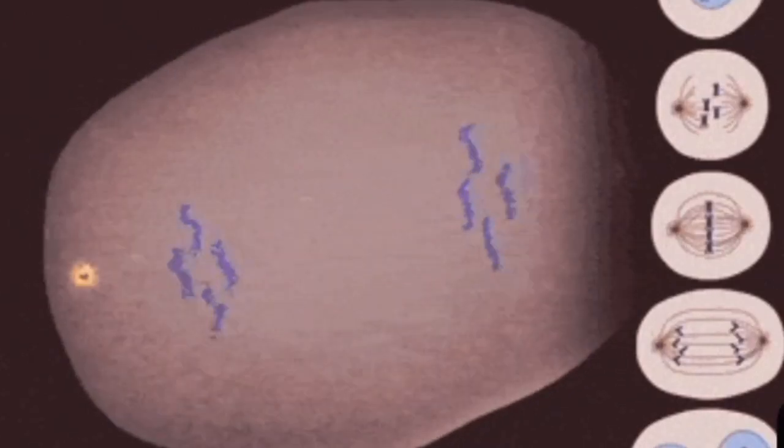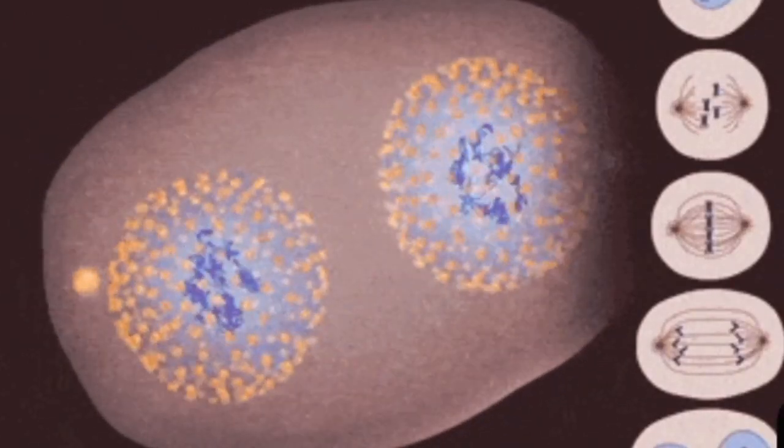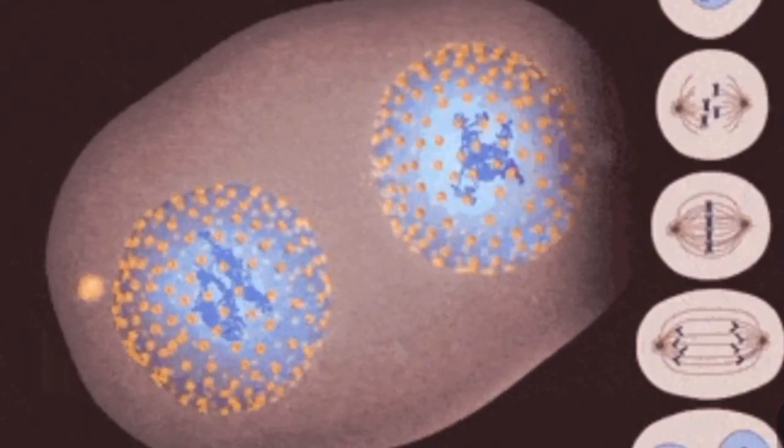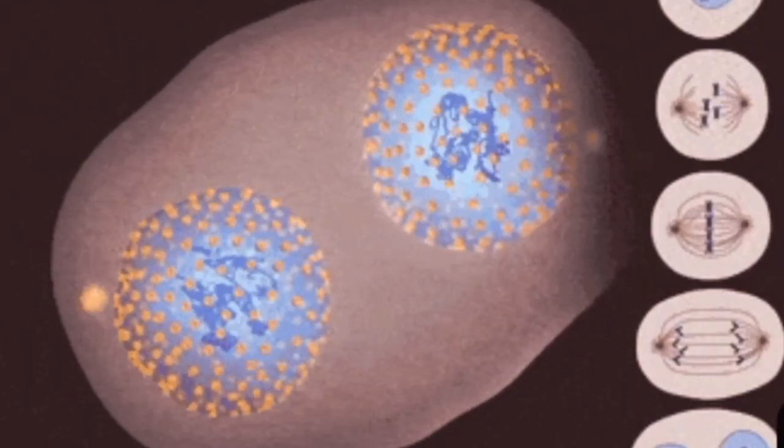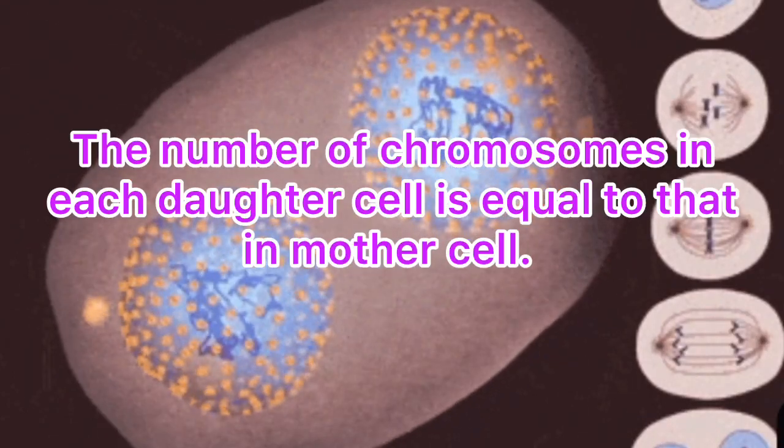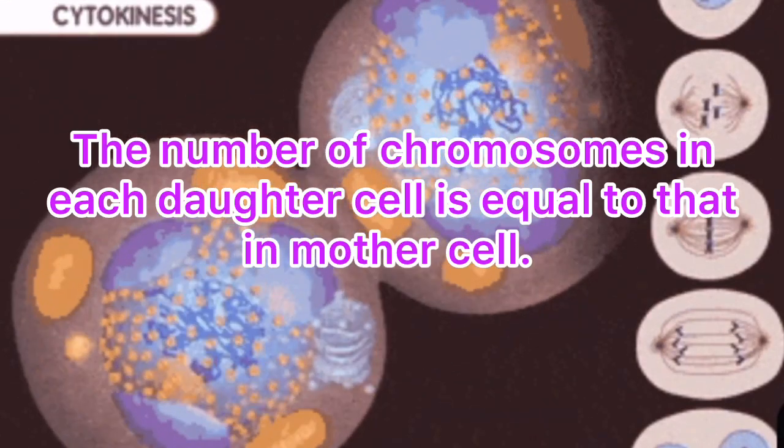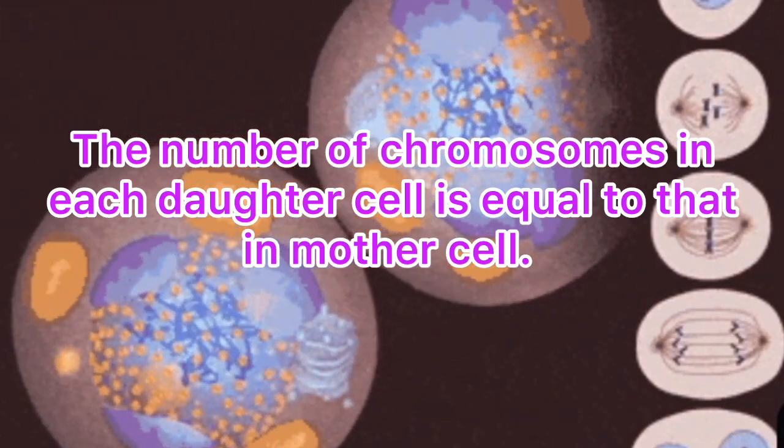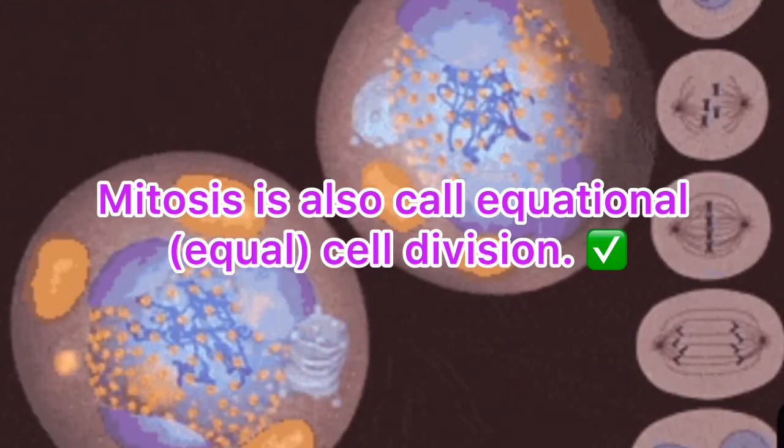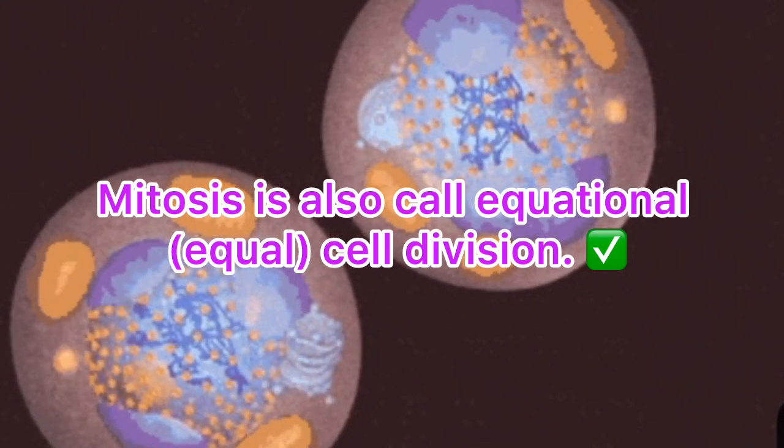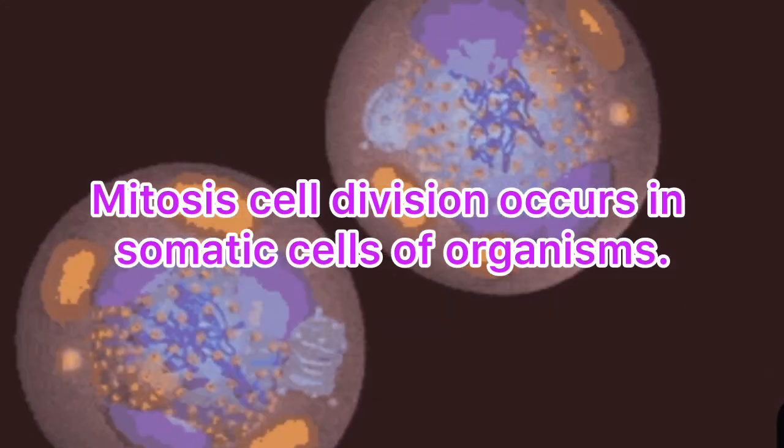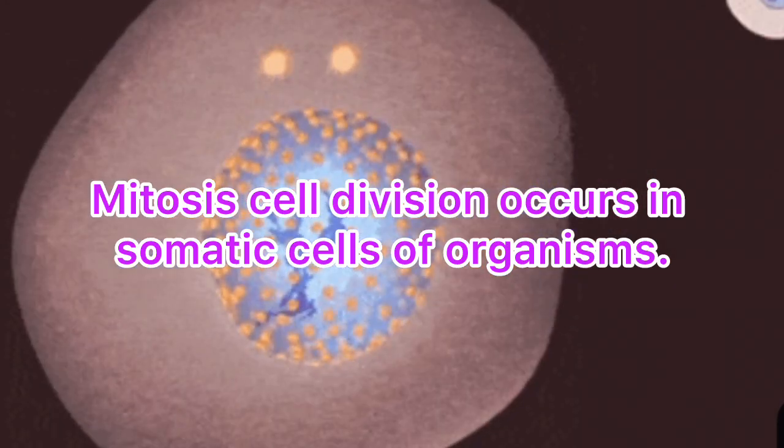In this video, you get the details about mitosis cell division. The cell division in which a mother cell divides into two identical daughter cells is called mitosis cell division. The number of chromosomes in each daughter cell is equal to that in mother cell; therefore, mitosis is also called equational cell division. Mitosis cell division occurs in somatic cells which plays main role for growth and development of body of organism.